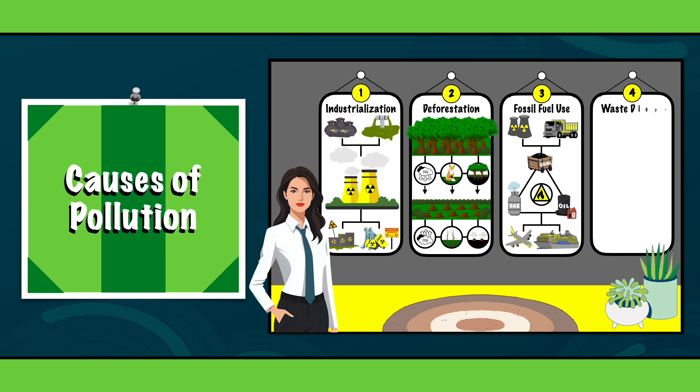4. Waste disposal. Improper waste management like discarding plastics, chemicals or other trash in the wrong bins or the environment contributes to pollution and harms our planet. Separating waste properly helps keep our waterways clean, protects wildlife and supports a healthier ecosystem.